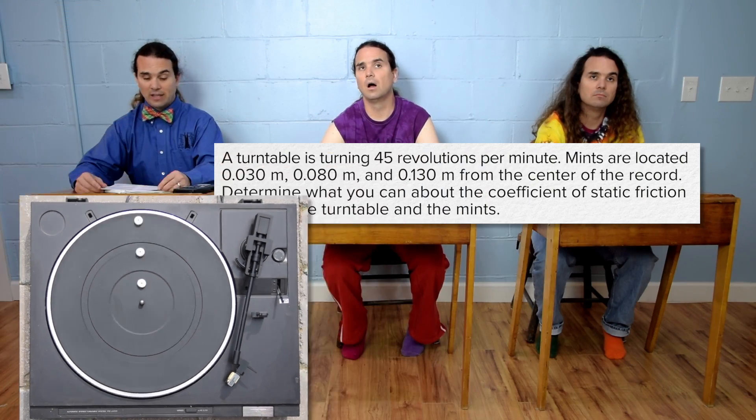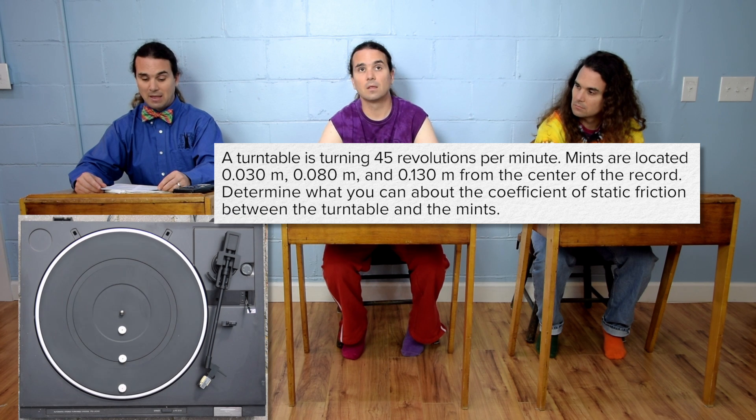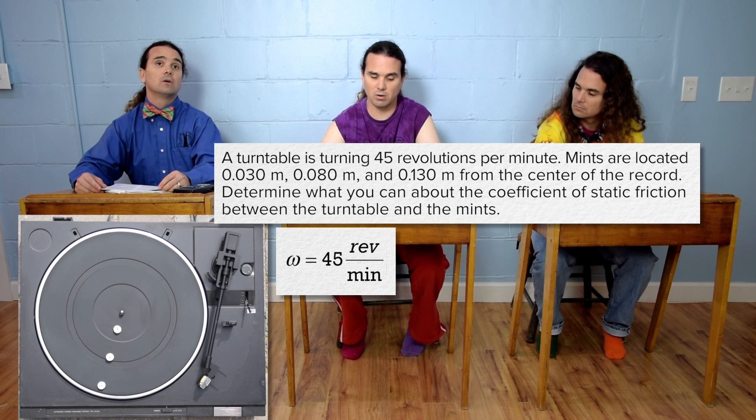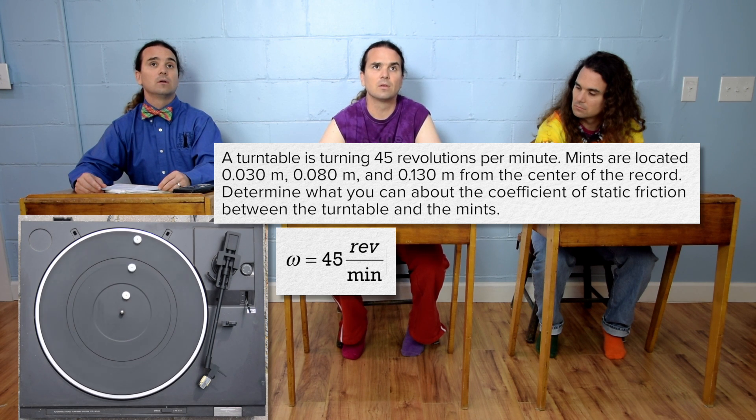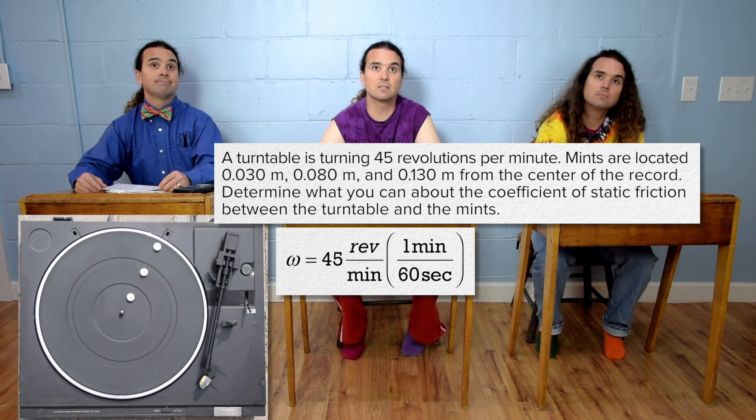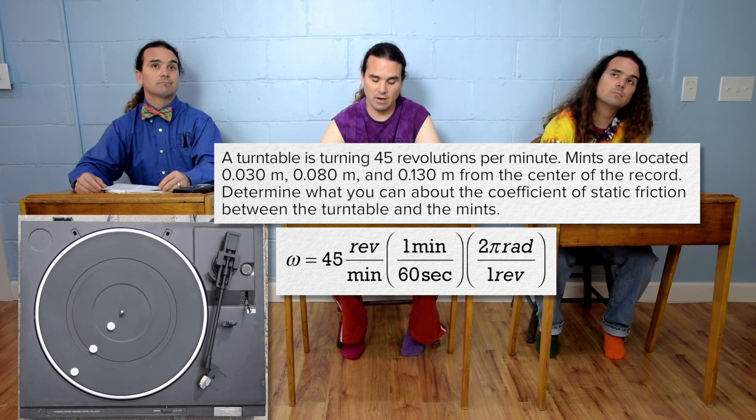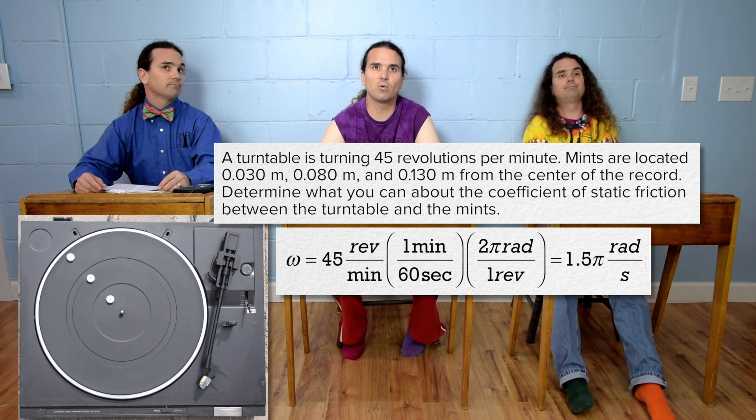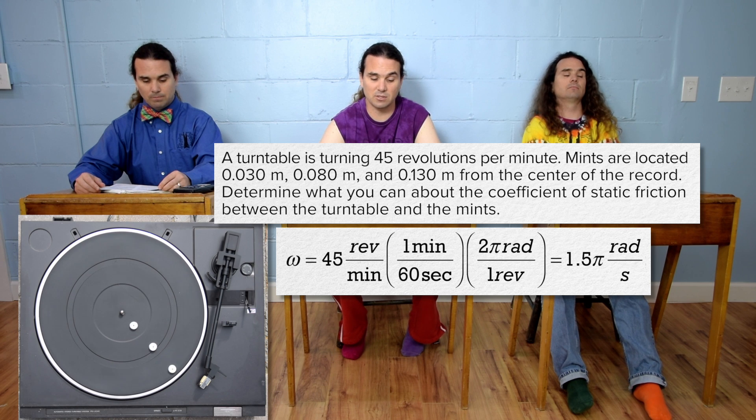Flippin' Physics! A turntable is turning at 45 revolutions per minute. Angular velocity is 45 revolutions per minute, which we need to multiply by 1 minute over 60 seconds and 2 pi radians over 1 revolution to get 1.5 pi radians per second.